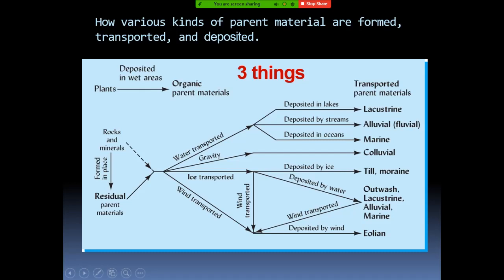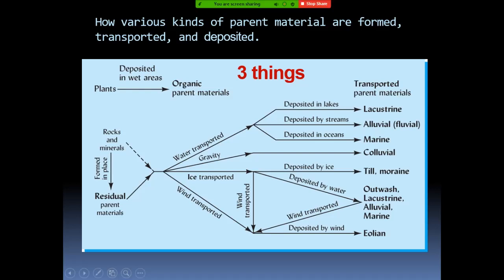Where does the soil form — is it in place or has it been transported? If the soil forms in place, then we call it residual material, because it has been formed in that particular place. The plant material or rocks and minerals undergo the weathering process without transportation from their original location, forming soil where the parent material is. We call this residual parent material.